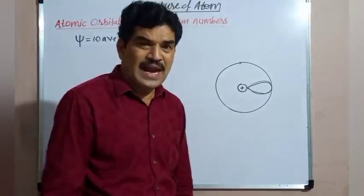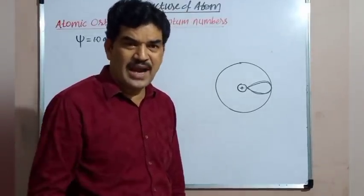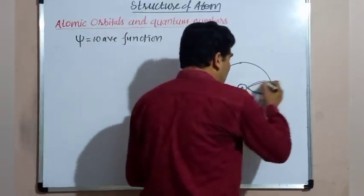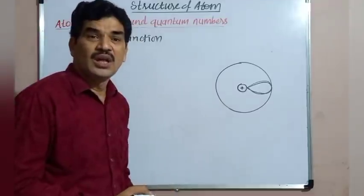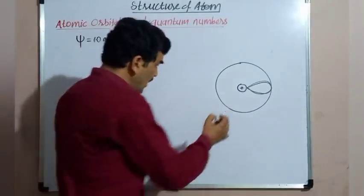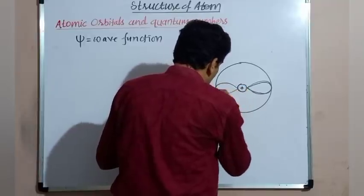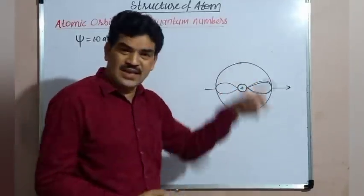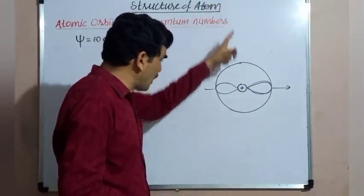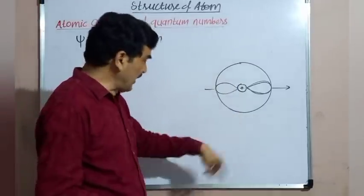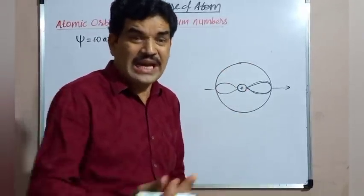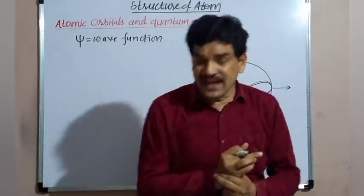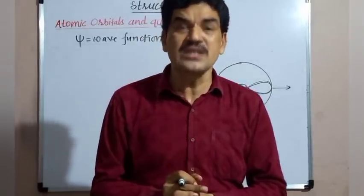Now what is the meaning of orientation? Orientation is nothing but the direction in which the atomic orbital is arranged. If the atomic orbital is arranged along the x-axis, its orientation is along the x-axis. If the atomic orbital is oriented along the y-axis — if it is arranged along the y-axis — then its orientation is along the y-axis. Orientation is nothing but the direction in which that atomic orbital is arranged.